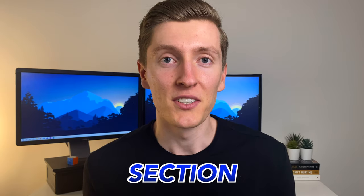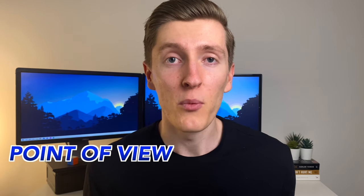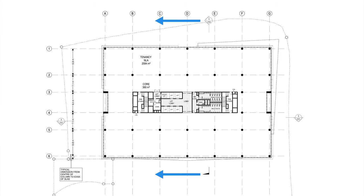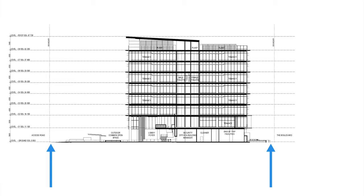Next is something called a section, and there are two things you need to understand about a section: the point of view and the way they are referenced. Every time you see a section marker reference symbol, this indicates that there's another drawing prepared that shows exactly what you could see from that point of view if you could slice straight through the structure and remove things that would usually be in the way. The direction the arrows point indicates which angle you are looking from, and only the parts of the structure that fall between the head and tail of this symbol will be shown on the drawing.